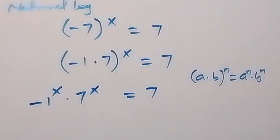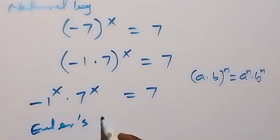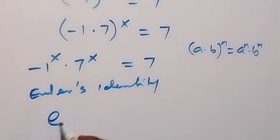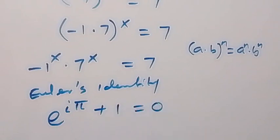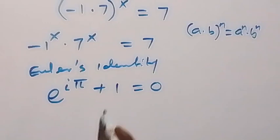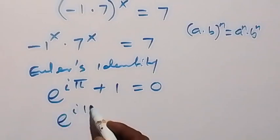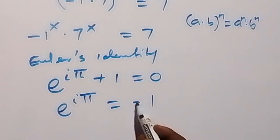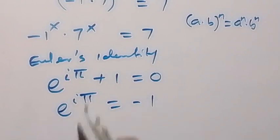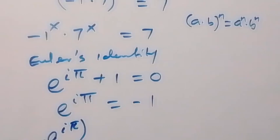Let's recall Euler's identity: e^(iπ) + 1 = 0. Taking the 1 to the other side, we have e^(iπ) = minus 1. That means instead of writing minus 1 in this equation, we can equally write e^(iπ), so that gives us e^(iπ) raised to power x.